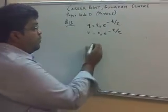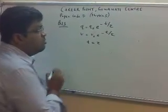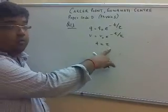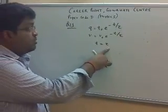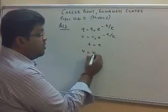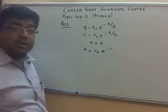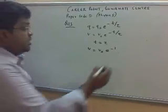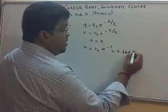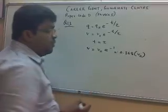Now, for t equal to tau — that is, in one time constant — v equals V0 times e to the power of minus 1. So this is 0.368 times V0.